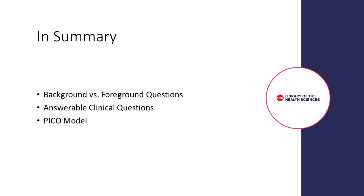In summary, there are generally two types of questions: general knowledge, or background questions, and specific knowledge, or foreground questions. Foreground questions tend to be more complicated and benefit from being relevant to the problem at hand, focused and well-articulated, and phrased to facilitate searching for a precise answer. PICO is a model to help you formulate answerable foreground questions. PICO stands for Patient, Intervention, Comparison, and Outcome.